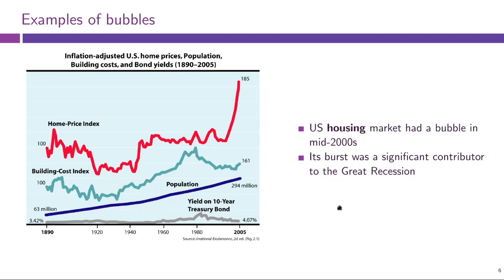Another prominent recent example is the US housing bubble, where housing prices boomed in the early 2000s. This graph from Wikipedia shows the home price index adjusted for inflation — it was more or less stable throughout the century and then drastically went up in the 2000s, which was not supported by building costs, bond yields, or surging population. This was the bubble that basically kick-started the Great Recession that all of us lived through.